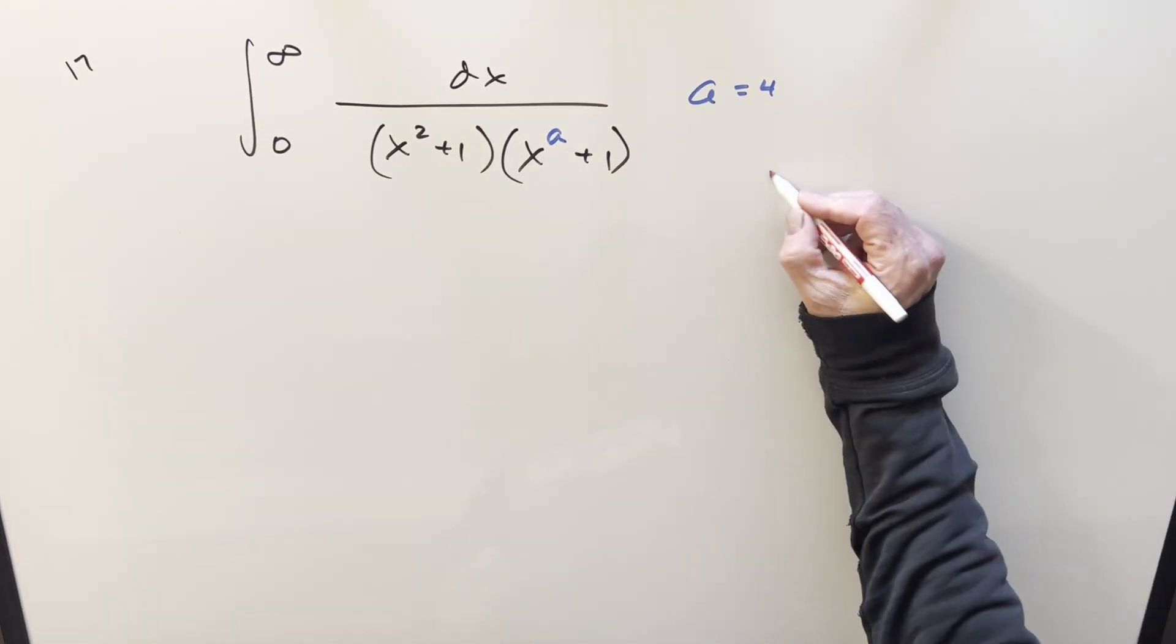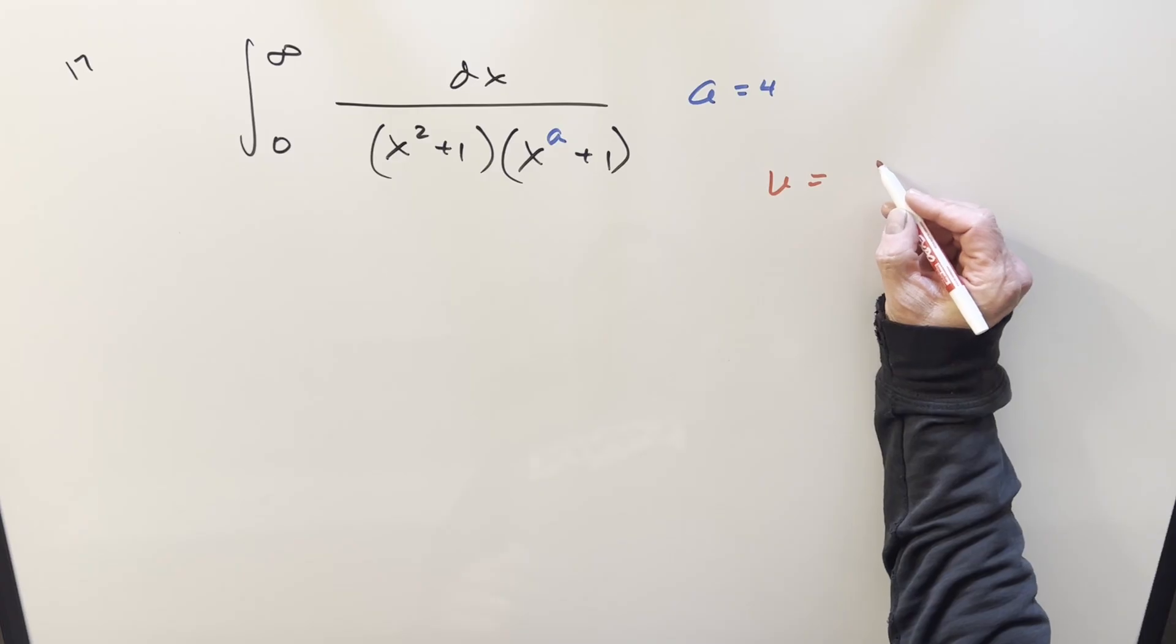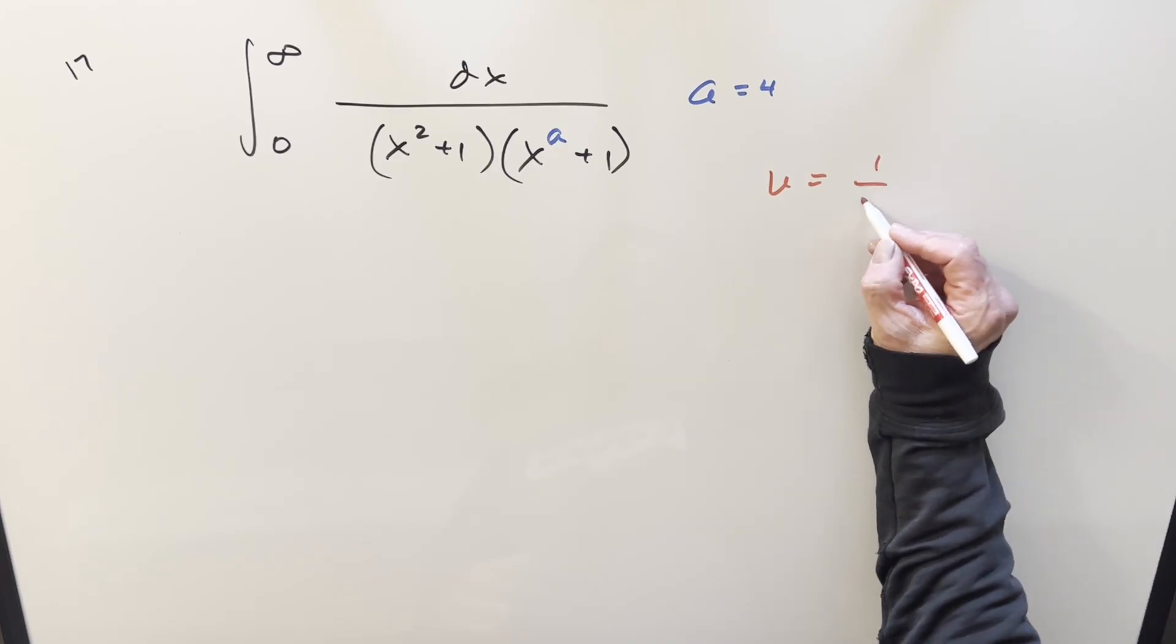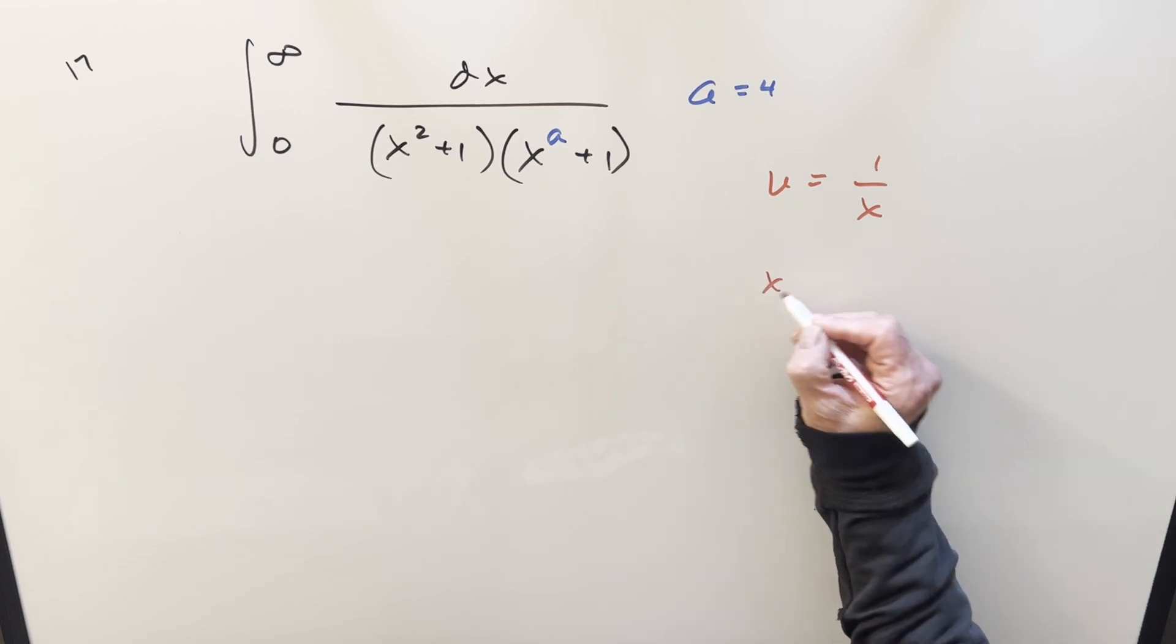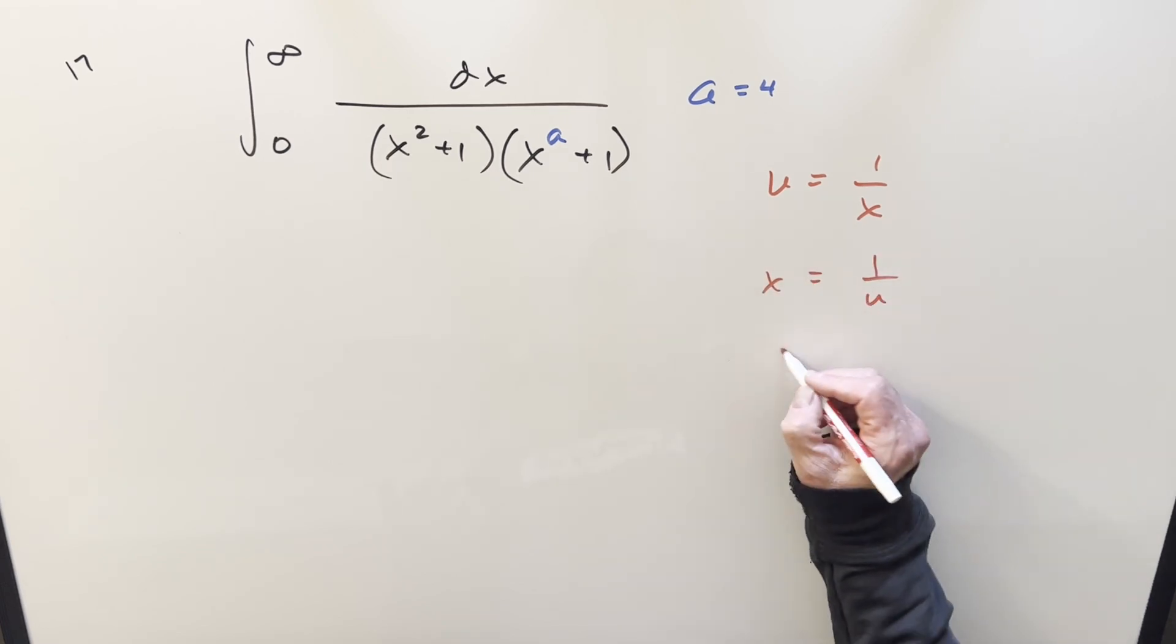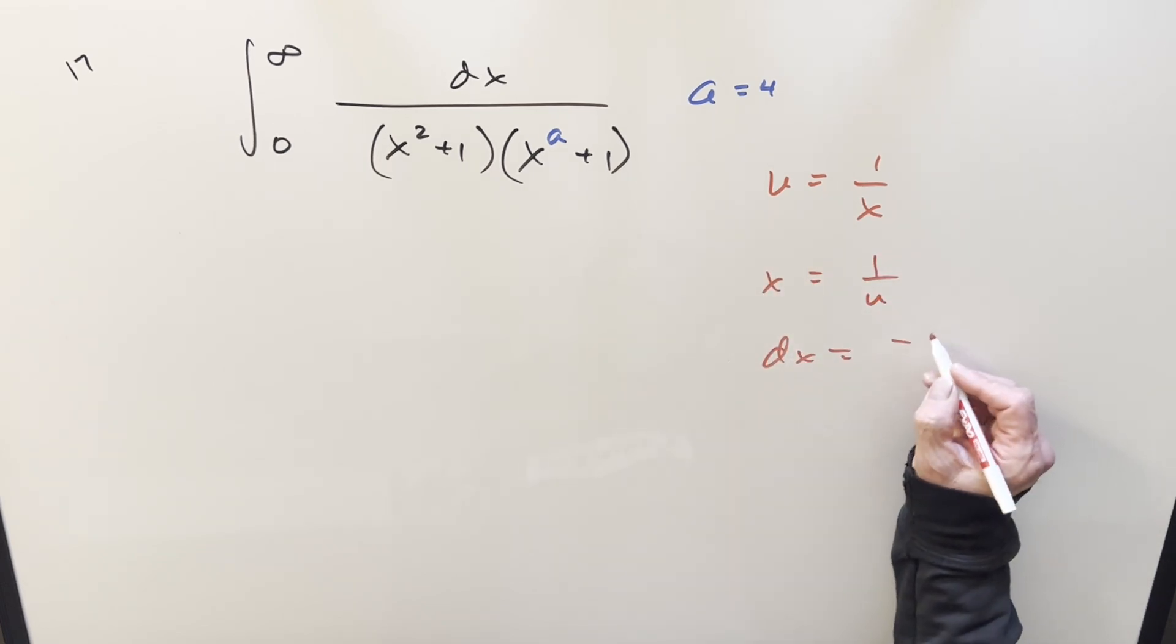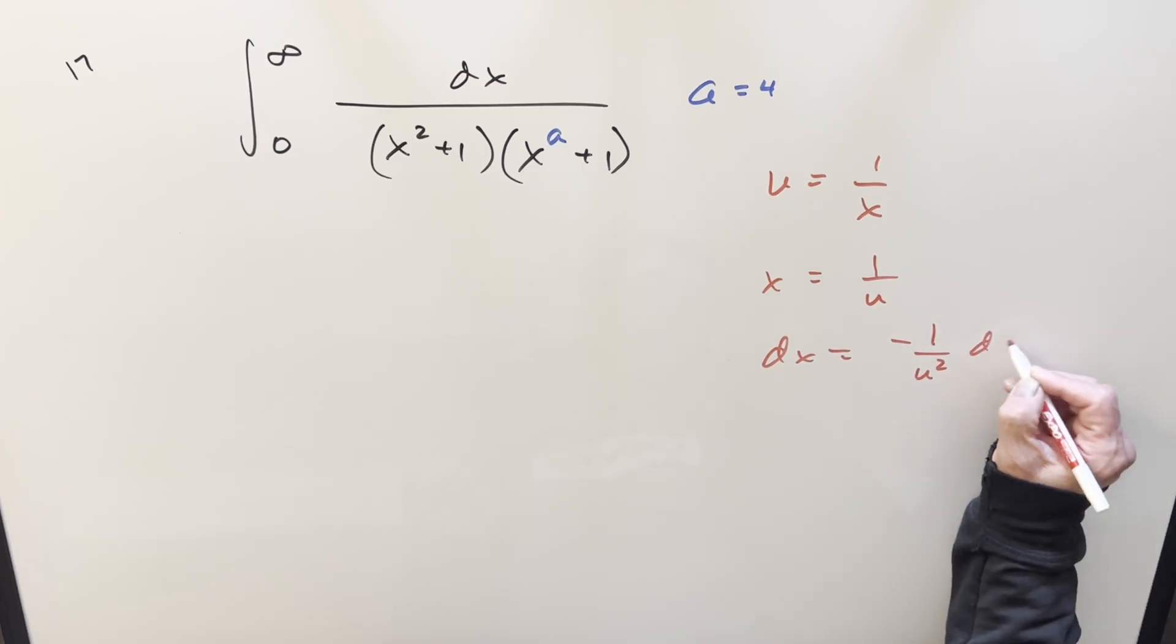And then for starters, let's do a u-substitution on it. I just want to flip, just take a reciprocal. So u = 1/x. From this, we also have x equals 1 over u, and taking a derivative, we have dx is going to be minus 1 over u² du.